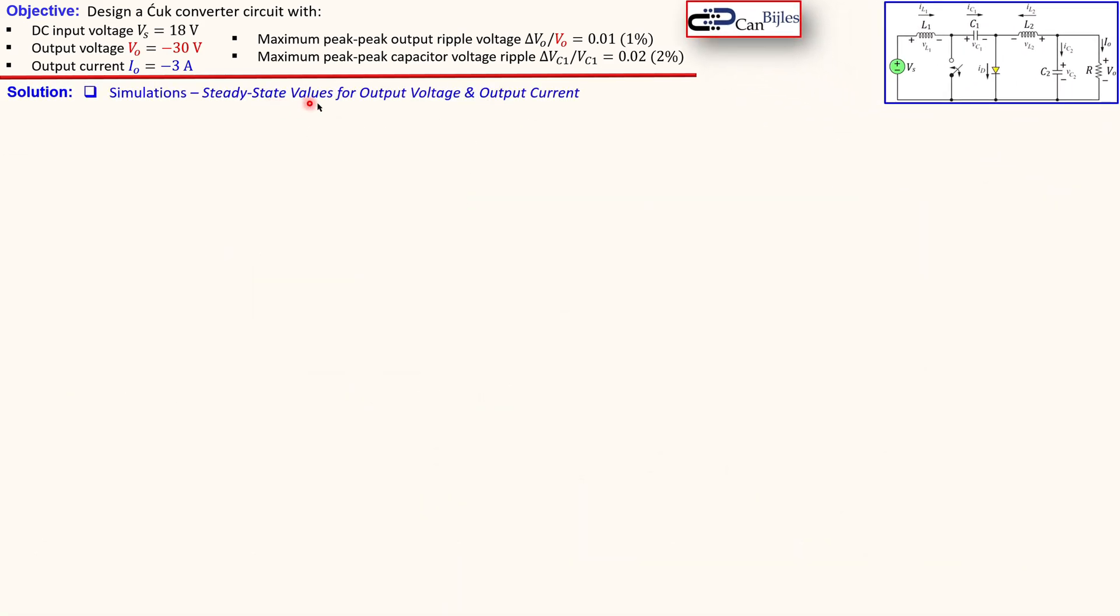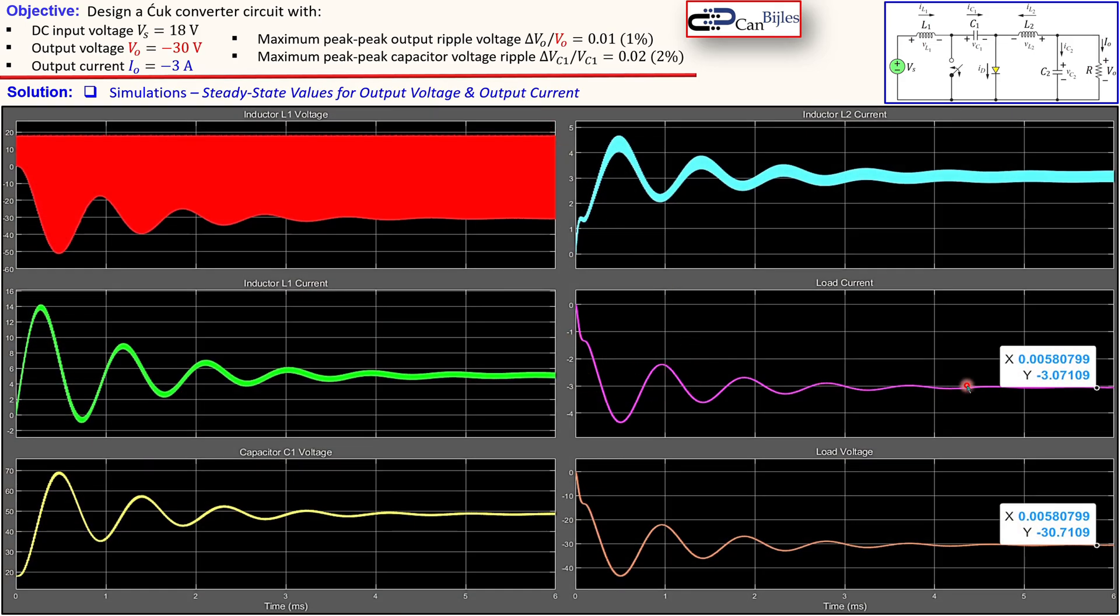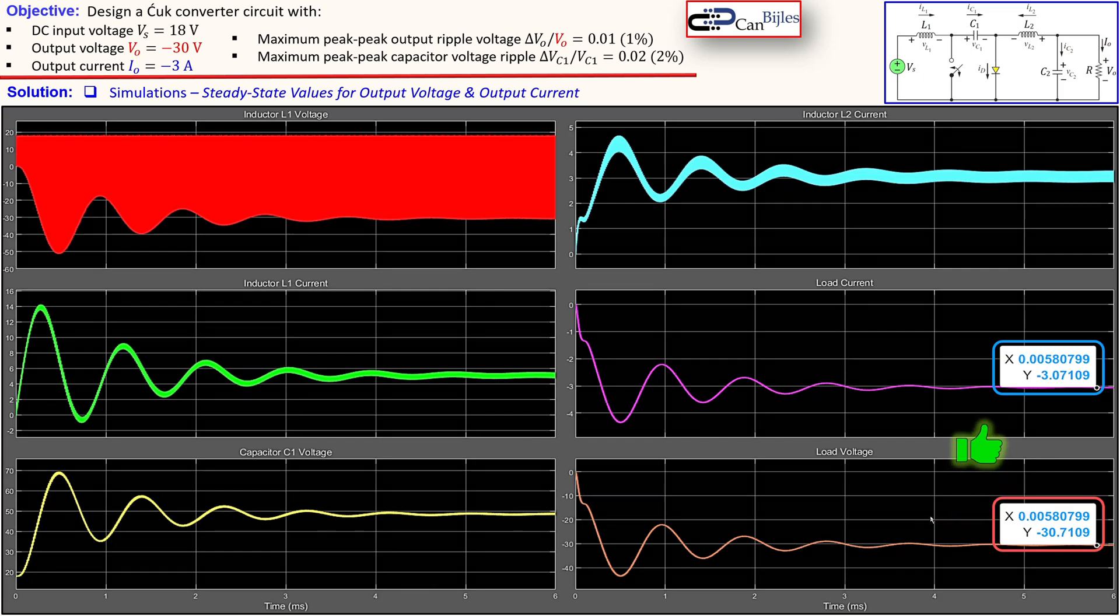Now looking at the steady state values for the output voltage and the output current in this plot, you see here in pink the output current or load current, and here in light orange or some light brown color, the output or the load voltage. Now looking here, it is then minus 3.07 amps. So we should have minus 3 amps, so close. And in this case for the output voltage, we have minus 30.7 volts. So again, a little bit larger, or I mean a little bit smaller than actually what we need. So small error, but still good enough for most practical purposes.